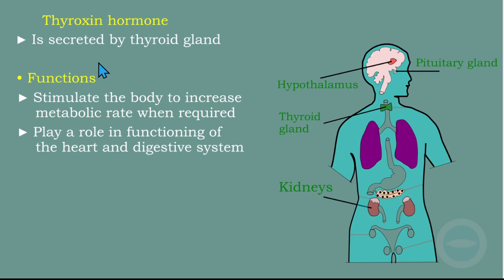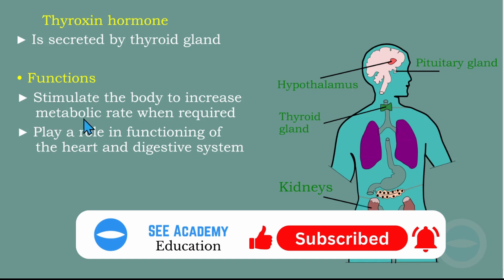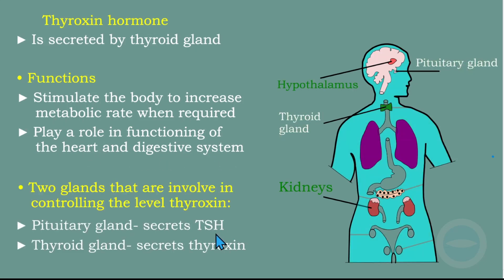The functions of the thyroxine hormone: thyroxine hormone stimulates the body to increase metabolic rate when required. Metabolic rate is the process of transferring food into energy — that process is called metabolism. Another function of the thyroxine hormone is that it plays a role in the functioning of the heart and the digestive system. The glands that control the secretion of thyroxine hormone are the pituitary gland — found in the brain — and the thyroid gland. These are the two glands responsible for the secretion of thyroxine hormone.